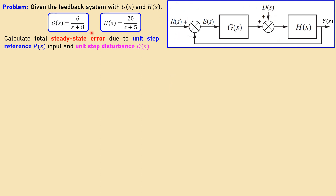These are the transfer functions for this example for G and H. You can see both of them are first order and all stable. In order to do the steady state analysis, your system must be stable, so we can already see from this that it is stable. The required calculation here is: calculate the total steady state error due to the unit step reference and unit step disturbance — so those are all unit step inputs.